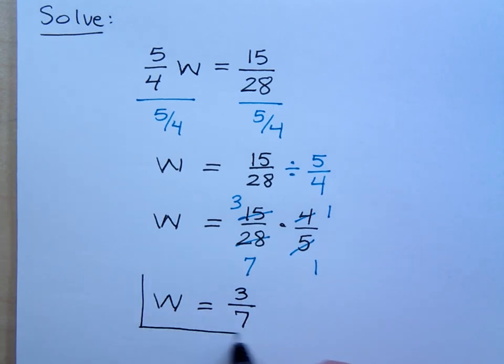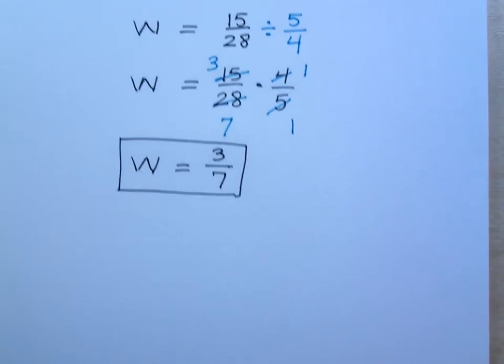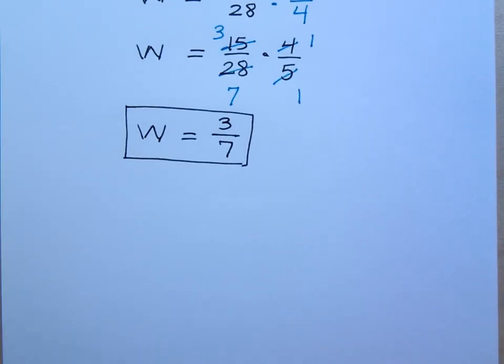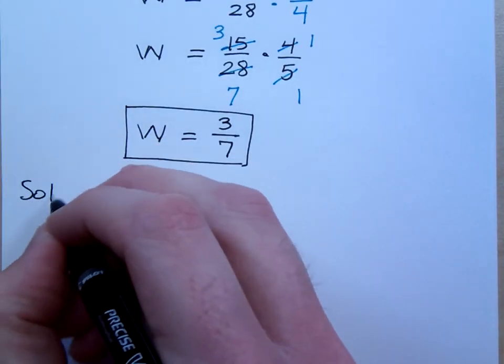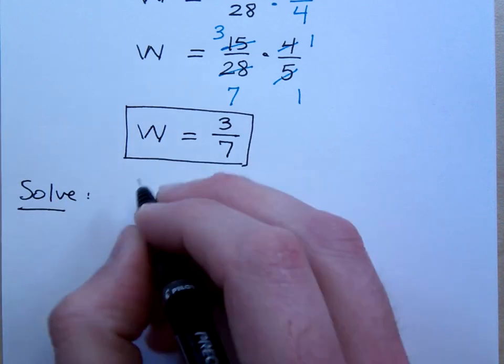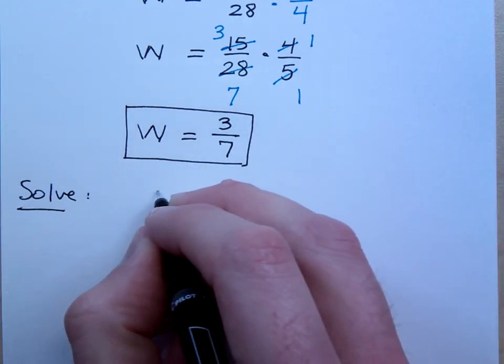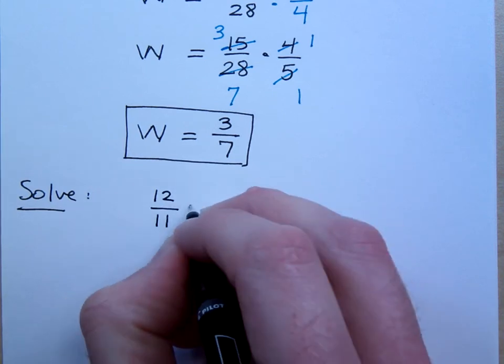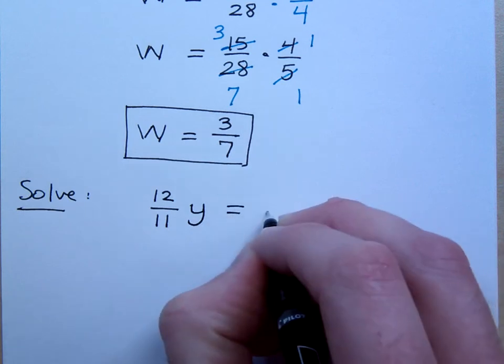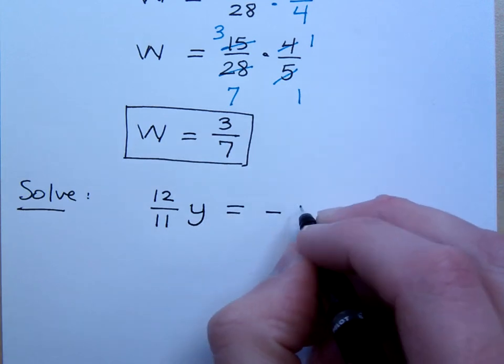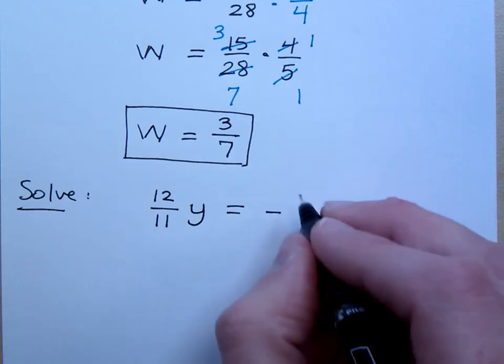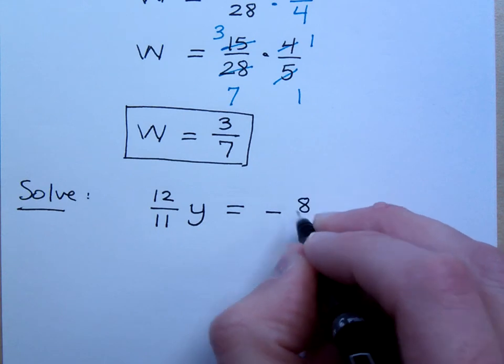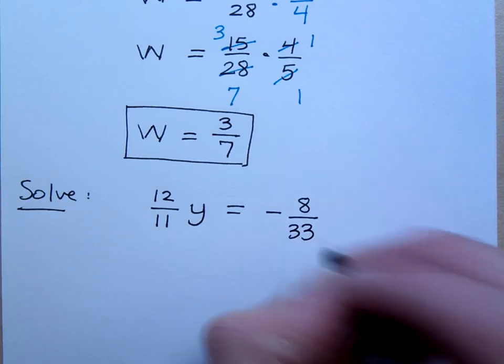You know, there's an easier way to do this problem. Would you like to see it? No, I'm just going to make you see it. You have no choice now. The other way, or actually I'm going to do just a different example here. I'm going to take 12 11ths y is equal to negative... Excuse me. Negative 8 over 33.